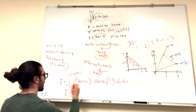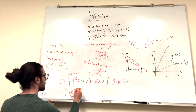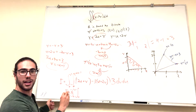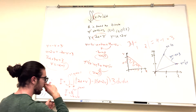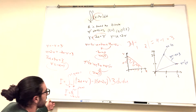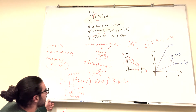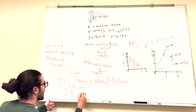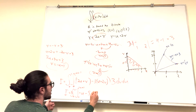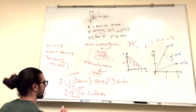Simplifying: 2u minus 3u is negative u, and v minus 6v is negative 5v. So the integrand becomes negative u minus 5v, and the full integral is 3 times the double integral of (negative u minus 5v) dv du, with v from 0 to negative u plus 1 and u from 0 to 1.